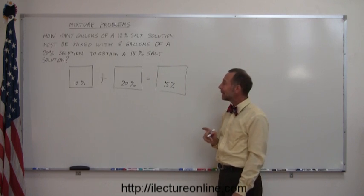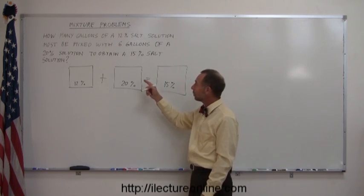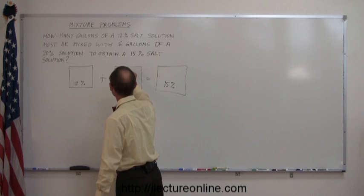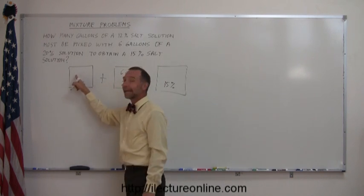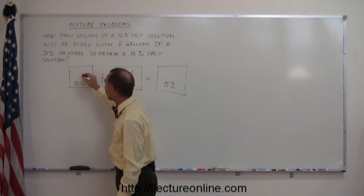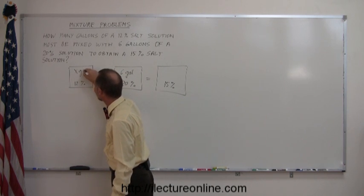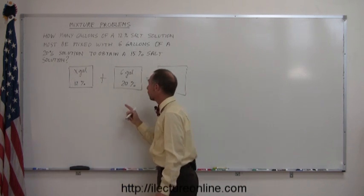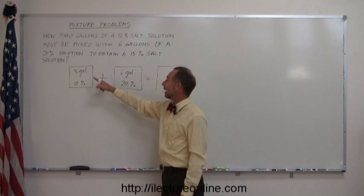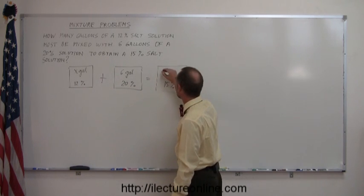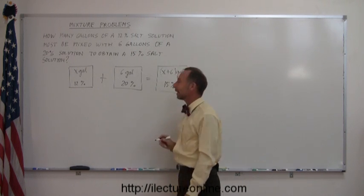Then you write down how many gallons you have of each. Now the only one that you know is this one right here, so we have six gallons of this solution. You don't know how many gallons you have of this solution, so we'll write simply X gallons. And then, of course, if you add them together, then here you'll have X plus six gallons in the final solution.